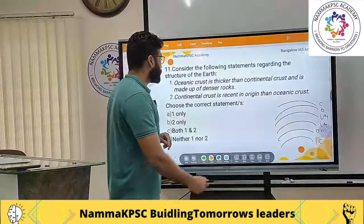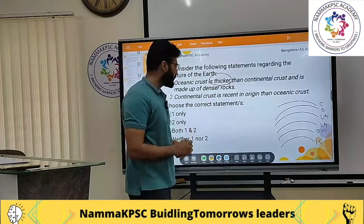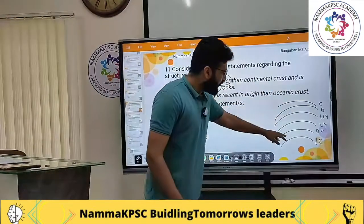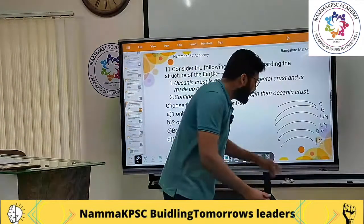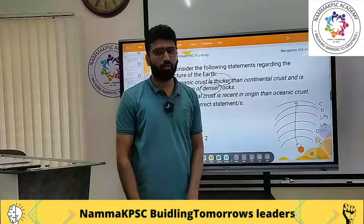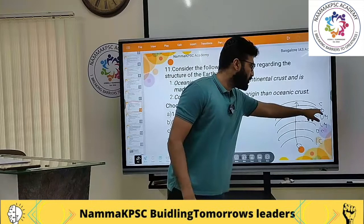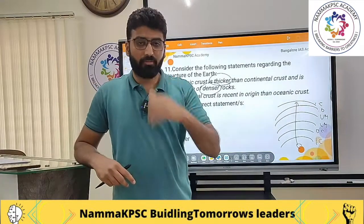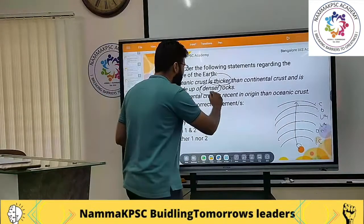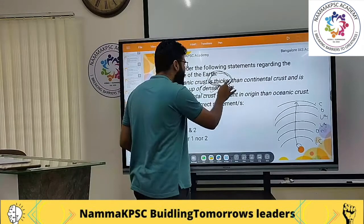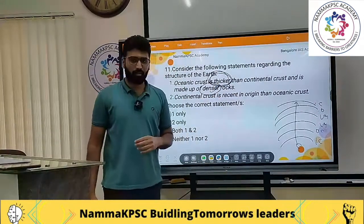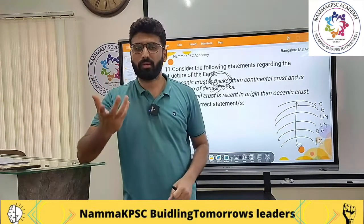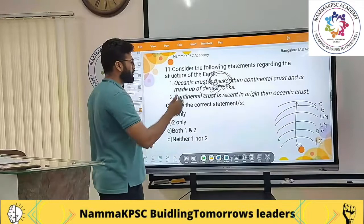There are two things being discussed: the thickness of oceanic crust and its density. Density increases towards the center, meaning as you move from the center towards the surface, density reduces. So the oceanic crust, made up of basalt, is denser than the continental crust — that part is correct. But the oceanic crust is much thinner, only about 5 to 10 kilometers thick, whereas continental crust can be 35 to 40 kilometers thick. So the statement is incorrect.